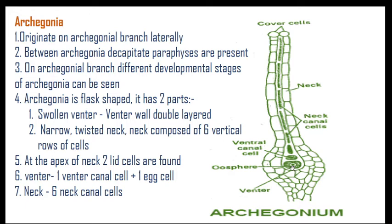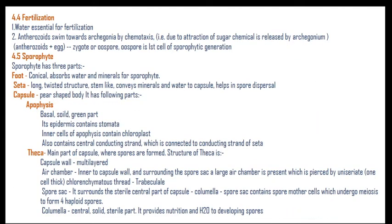The largest cell is the oospore or egg cell. Above that is the venter canal cell, and above that are six neck canal cells (1, 2, 3, 4, 5, 6) protected by jacket cells. At the apex of the neck there are two cover cells. This is the complete structural arrangement of the archegonium.